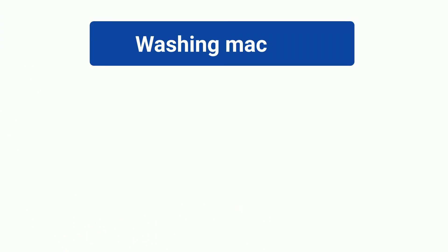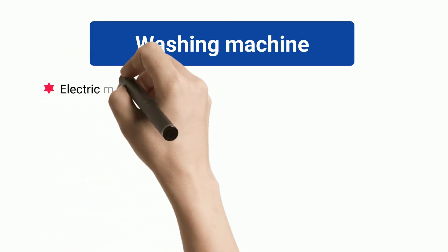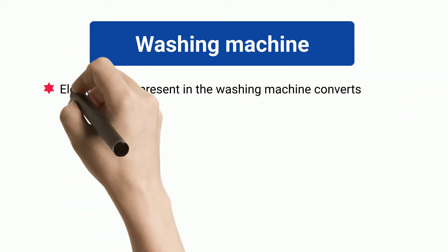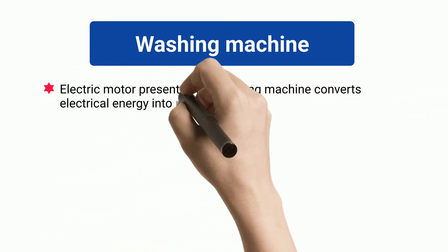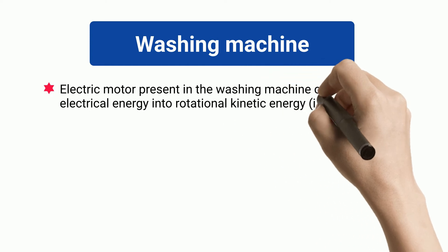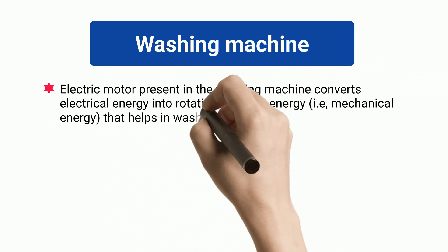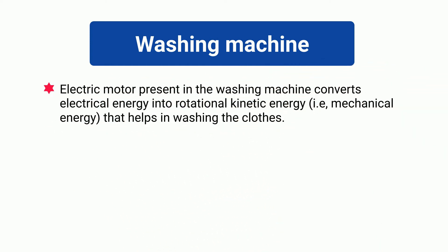Washing Machine. The electric motor present in the washing machine converts electrical energy into rotational kinetic energy — mechanical energy — that helps in washing the clothes.